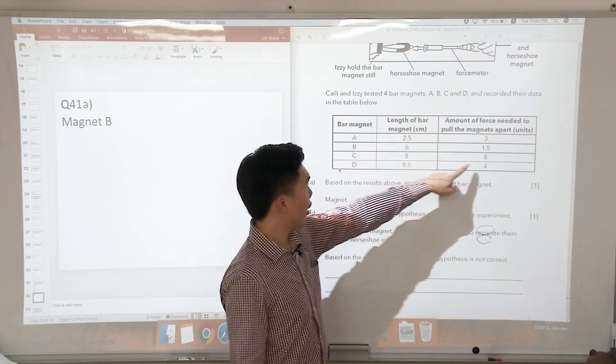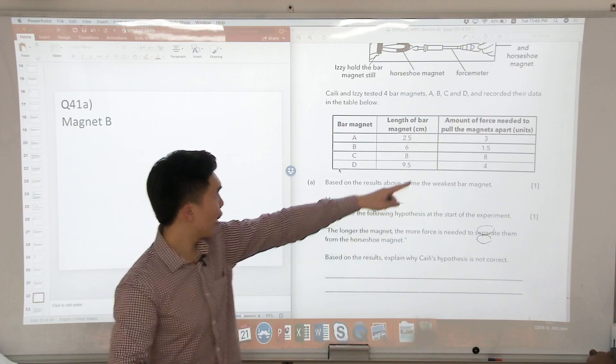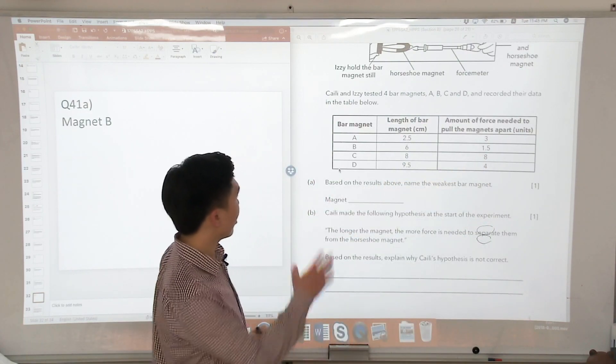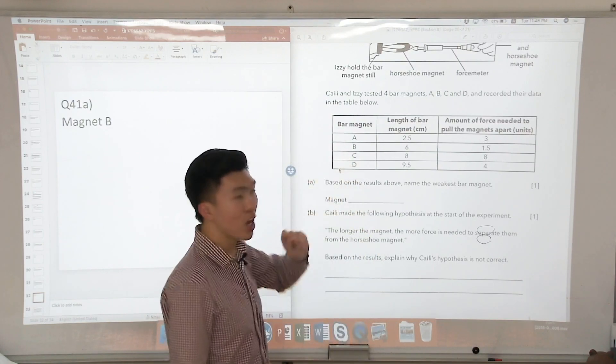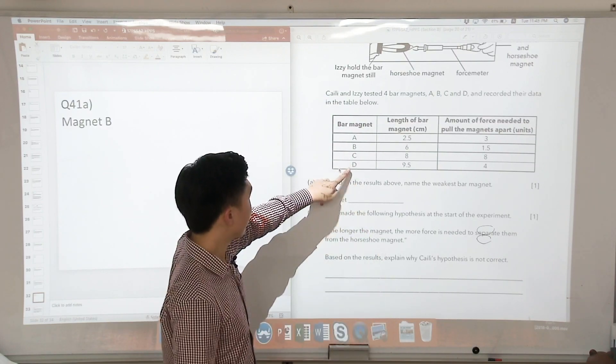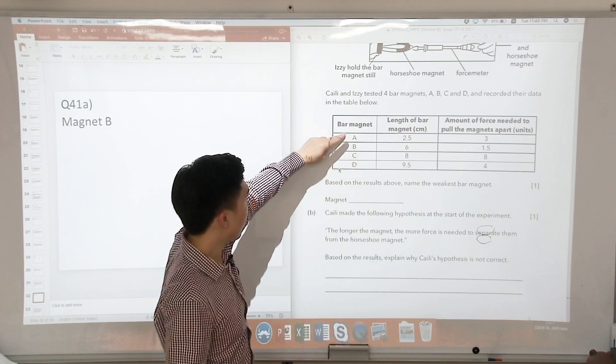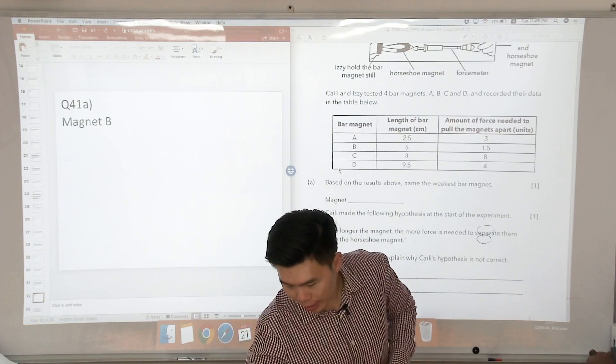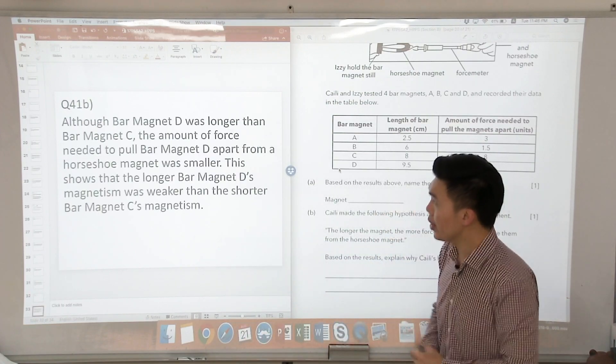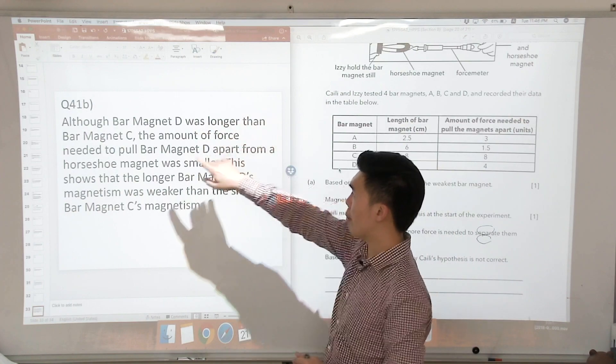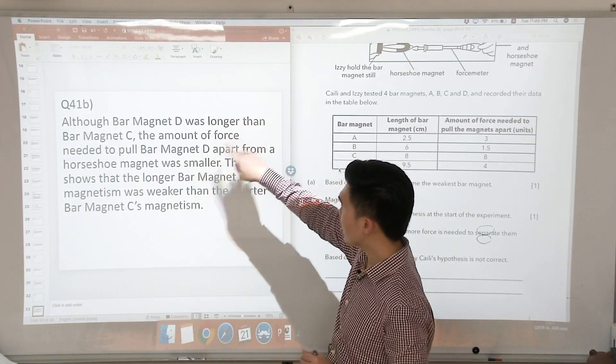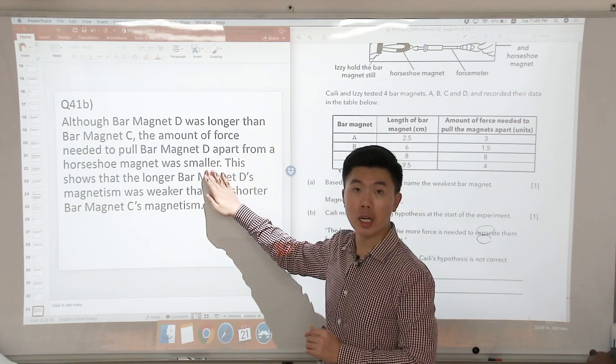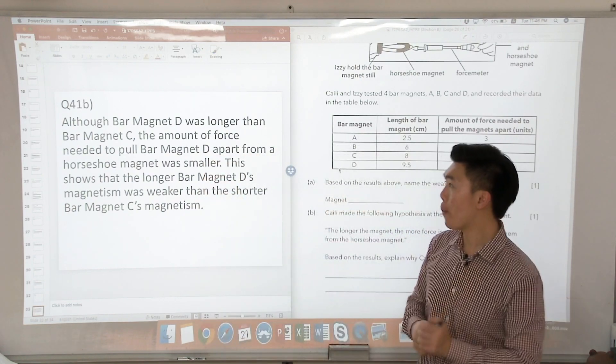But for bar magnet C, the force needed to pull the magnets apart from the horseshoe magnet was 8 as compared to D's 4. So this means that the magnetic strength of bar magnet C is stronger than that of D. So you can either compare A versus B or C versus D. So this is my answer here. I compared C versus D. I say that although bar magnet D was longer than bar magnet C, the amount of force needed to pull bar magnet D apart from the horseshoe magnet was smaller.